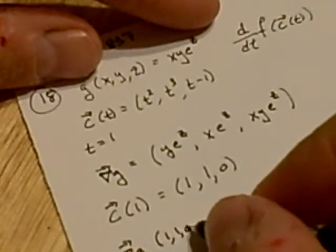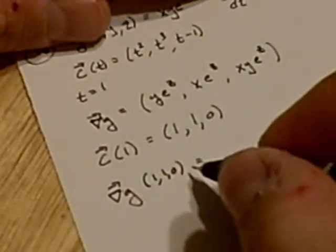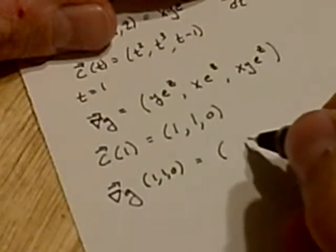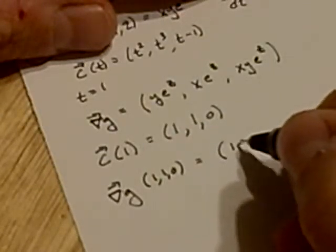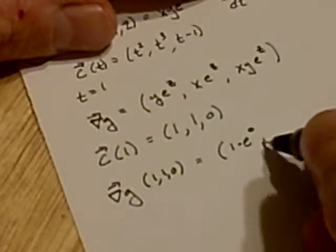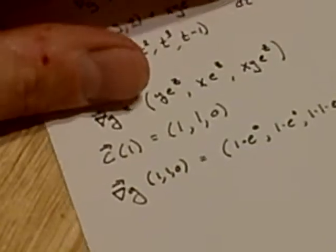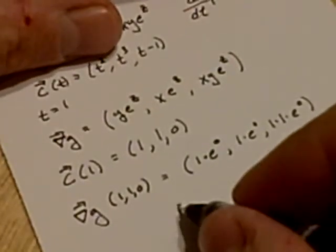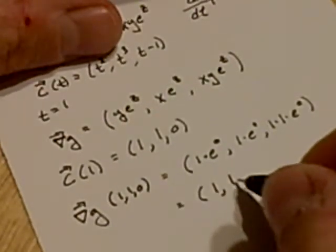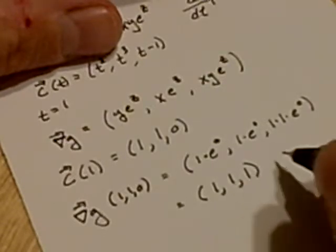So plugging those in for x, y, and z gives us, let's see, 1 times e to the 0, then we'll have 1 times e to the 0, and then 1 times 1 times e to the 0. Kind of generous numbers here. So we have 1, 1, 1. So this is the gradient at that point.